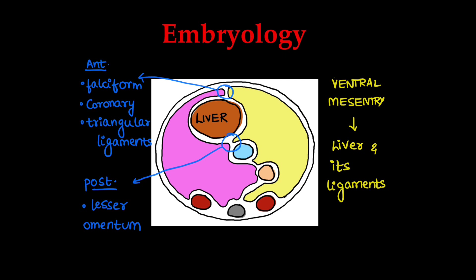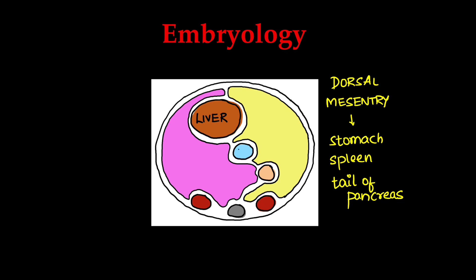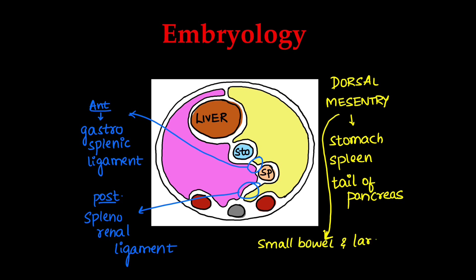The dorsal mesentery gives rise to the stomach, spleen and tail of pancreas. Between the stomach and spleen, the anterior part of the dorsal mesentery gives rise to the gastrosplenic ligament. Behind the spleen, there is the splenorenal ligament between the spleen and kidney. The dorsal mesentery also gives rise to the small bowel and large bowel mesentery.